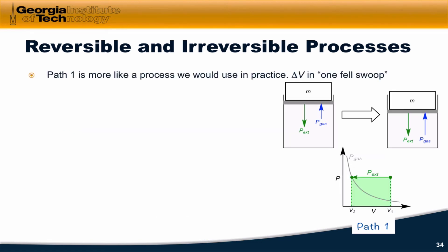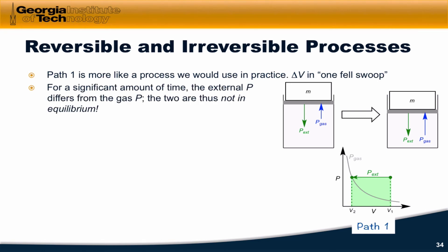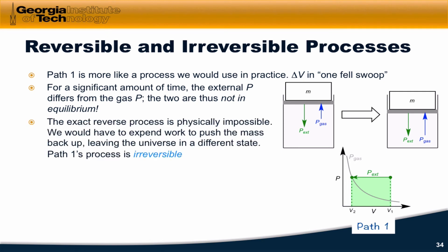Path one looks more like a process we'd see in real life, where we just dump a certain mass on top of the piston so that the external pressure is greater than the gas pressure the whole way until the final state. For essentially the entire process, the external pressure differs from the gas pressure, so the system and surroundings are not in equilibrium with each other. As it turns out, the exact reverse of this process is physically impossible — we would have to, for example, expend work to convert the right-hand state into the left-hand state.